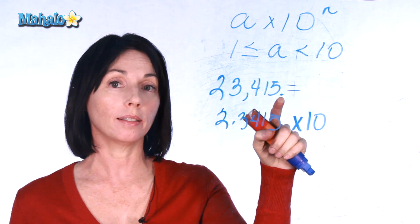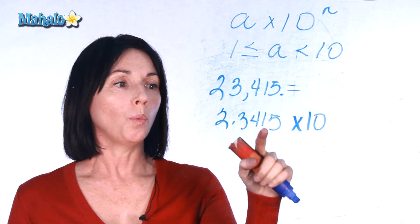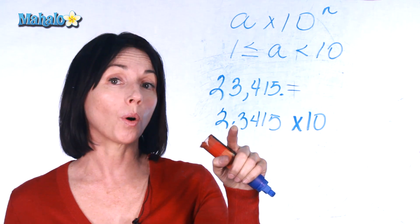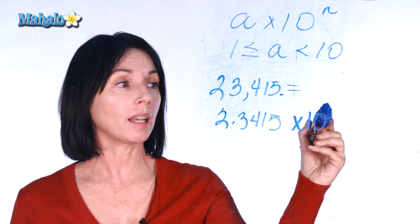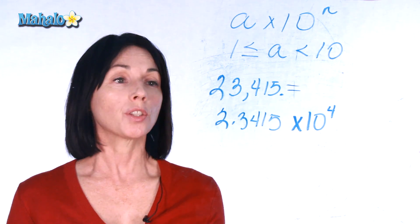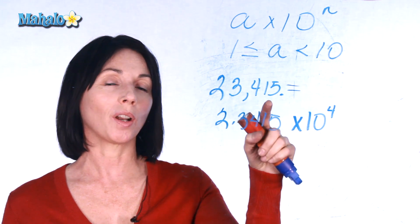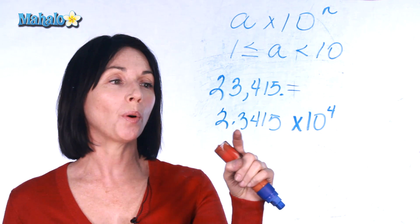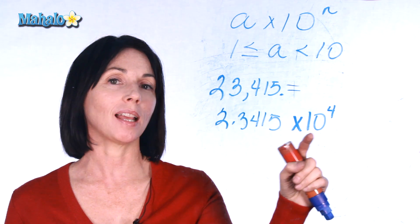So, we start here and just count. One, two, three, four. I moved the decimal place four positions. So, that means that my exponent is four. So, that takes 23,415 and writes it in scientific notation: 2.3415 times ten to the power of four.